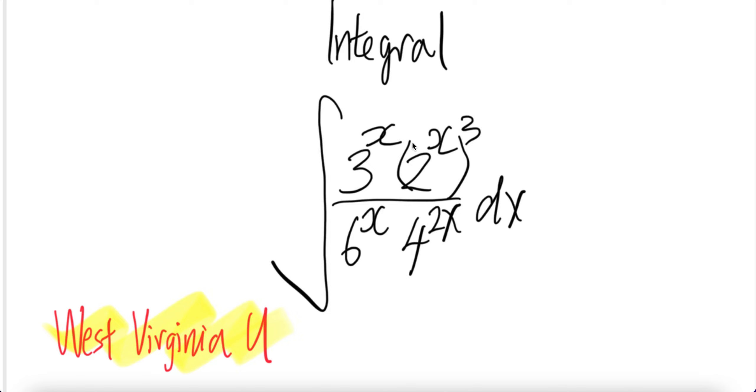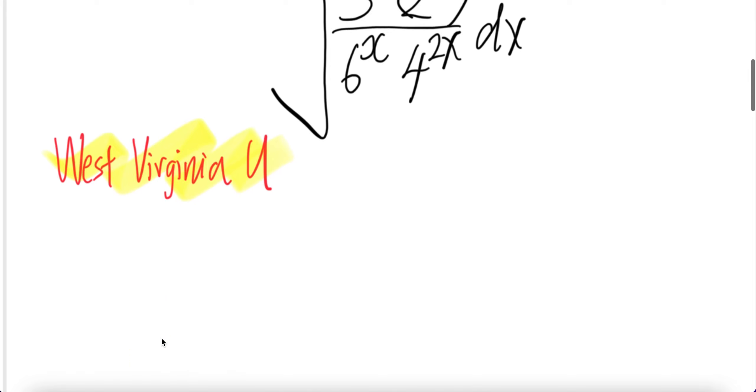Integral of (3^x × 2^x)^3 divided by 6x × 4^(2x) dx. Problem from West Virginia University.